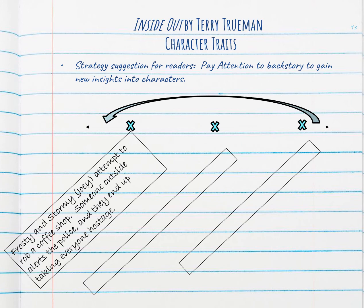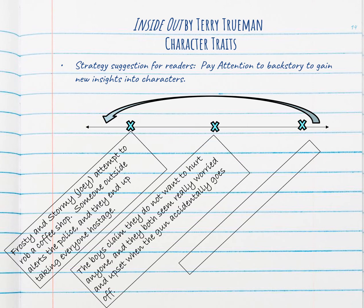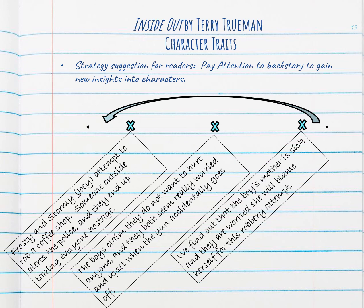Of the events that have happened so far, the first one is that Frosty and Stormy, who's really named Joey, attempt to rob a coffee shop. Someone outside alerts the police and they end up taking everyone hostage. We also know that the boys claim that they do not want to hurt anyone. And then they both seem really worried and upset when the gun accidentally goes off. At the very end of that chapter, we found out that the boy's mother is sick and they are worried that she will blame herself for this robbery attempt.